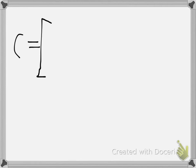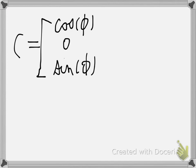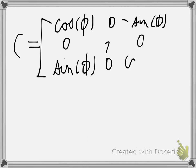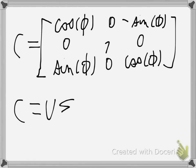I want to do another example — it seems tricky but it's really simple. Matrix C is a rotation matrix: [[cos φ, 0, sin φ], [0, 1, 0], [-sin φ, 0, cos φ]]. You want to find the singular value decomposition. How do you proceed?